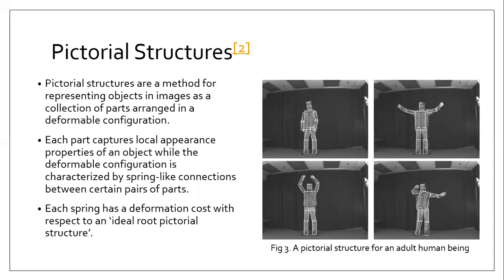Pictorial structures are a method for representing objects in images as a collection of parts arranged in a deformable configuration. As we can see, the person in different poses can be structured as a collection of parts — that is, limbs, head, and chest — in a deformable configuration. Each part captures local appearance properties of an object while the deformable configuration is characterized by spring-like connections between certain pairs of parts. Each spring has a deformation cost with respect to an ideal root pictorial structure.